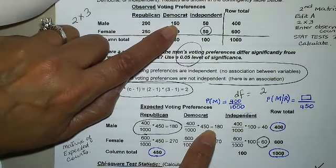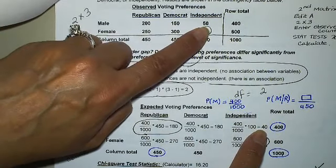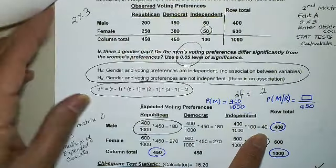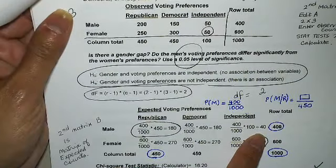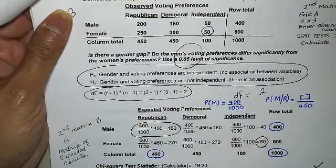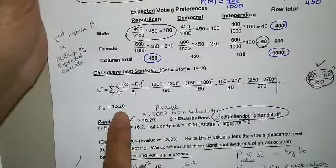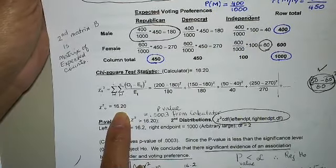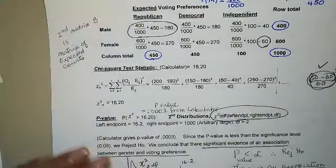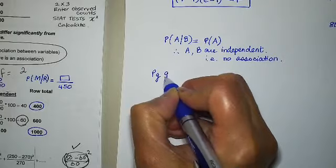The formula is exactly the same as it was before. So I say 200 minus 180, square it, divide by 180, plus 150 minus 180, square it, divide by 180, plus 50 minus 40, square it, divide by 40, and so forth. Are you with me? Yes? Yes or no? And I get a chi-square test statistic of 16.20.